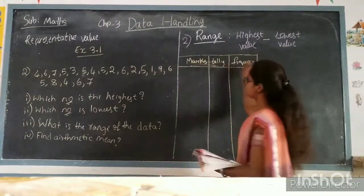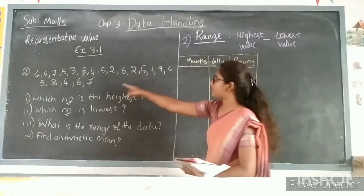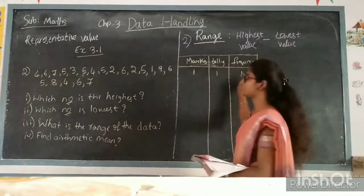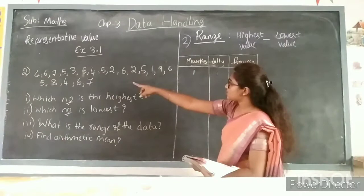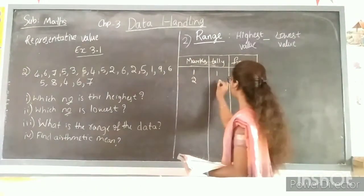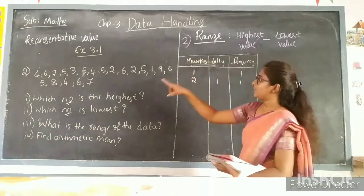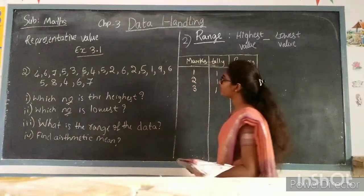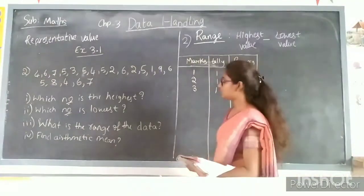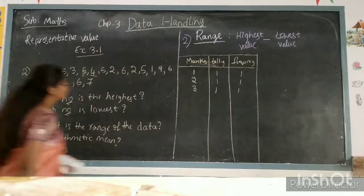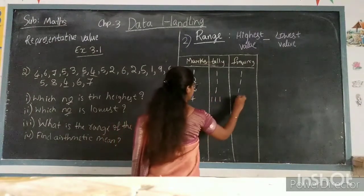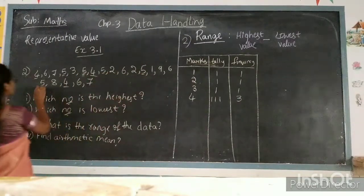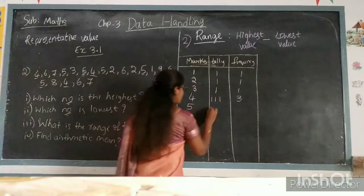The lowest marks here is 1, repeated only once — tally 1, frequency 1. The number 2 is present only once — tally 1, frequency 1. Number 3 is also given once only. Number 4 is repeated 3 times — frequency 3. And 5 is repeated 5 times — frequency 5.